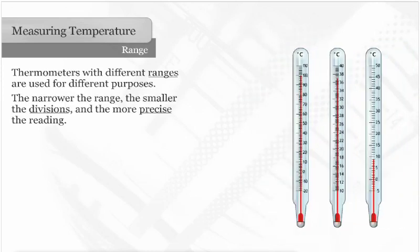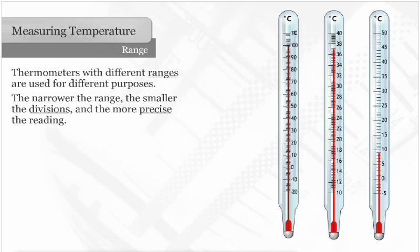The narrower the range, the smaller the divisions, and the more precise the reading. The range of the thermometer is based on the range of temperatures the substance that you are measuring could be. Thermometers have different ranges for different purposes.